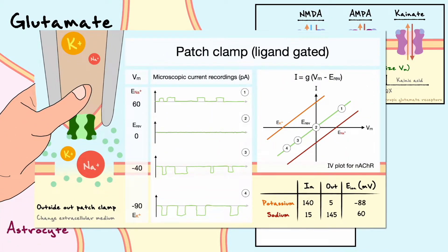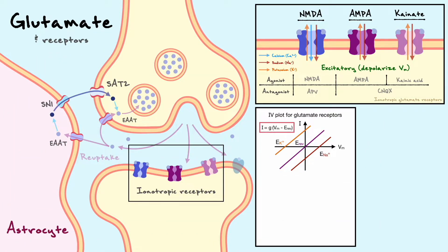For more information on IV curves and determining which ions pass through ligand-gated receptors, the neuromuscular junction video thoroughly explains how IV curves can be made for acetylcholine receptors from patch clamp results. Since AMPA and kainate receptors behave similarly to the nicotinic acetylcholine receptor, that video should be very helpful. In terms of structure, the three receptors have common features: an extracellular ligand-binding region and a pore that allows ion flow. The calcium specificity of the NMDA receptor comes from an important asparagine residue in its pore that the other channels lack.